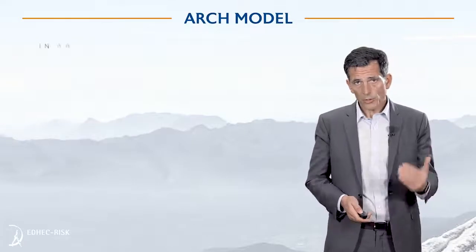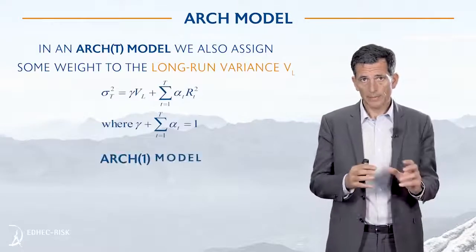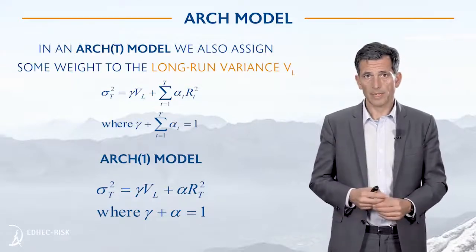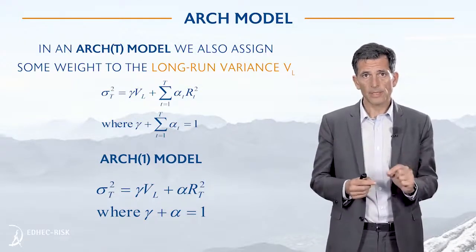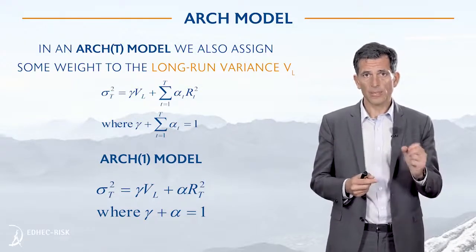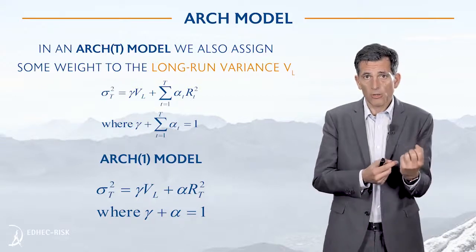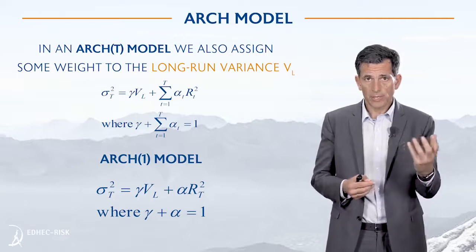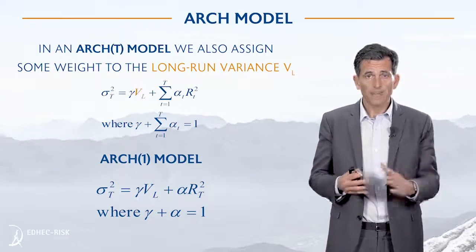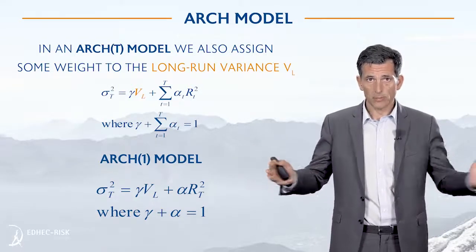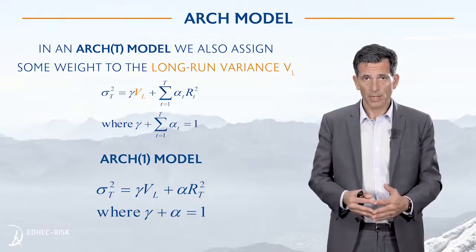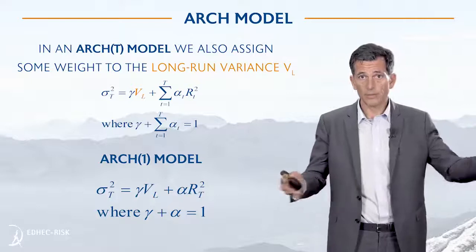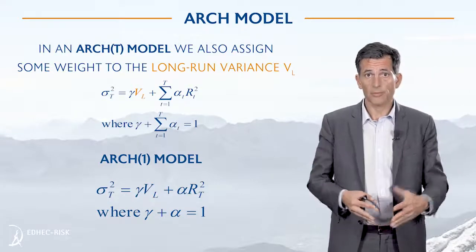The ARCH model is a slight variation around the same methodology and concept. The only difference is we are going to use some kind of long-term variance estimate as an anchor point. Let's call V_L the very long-term variance, which can be given, for example, by the variance estimate over the last 50 or 20 years.